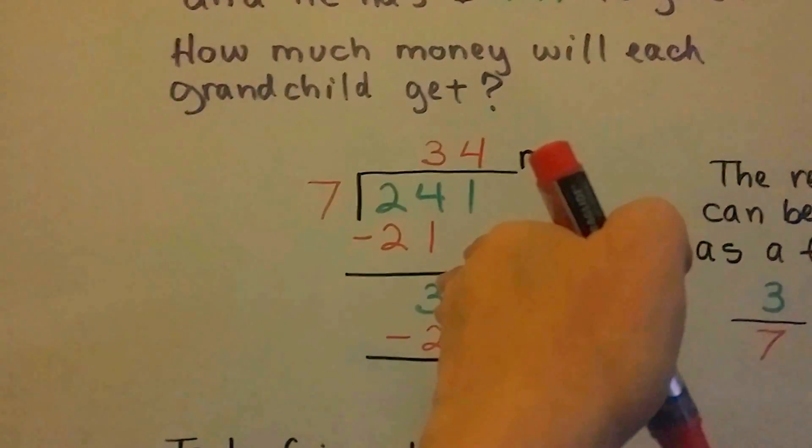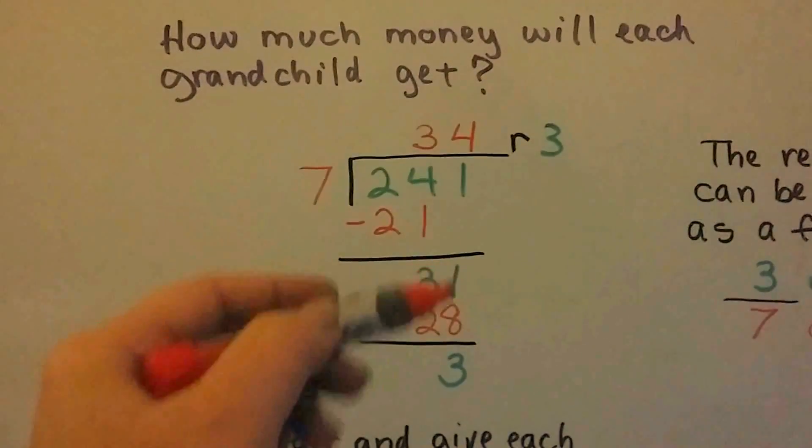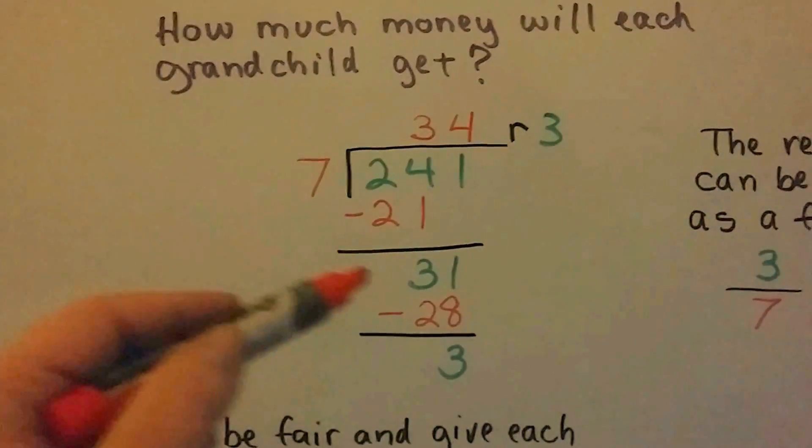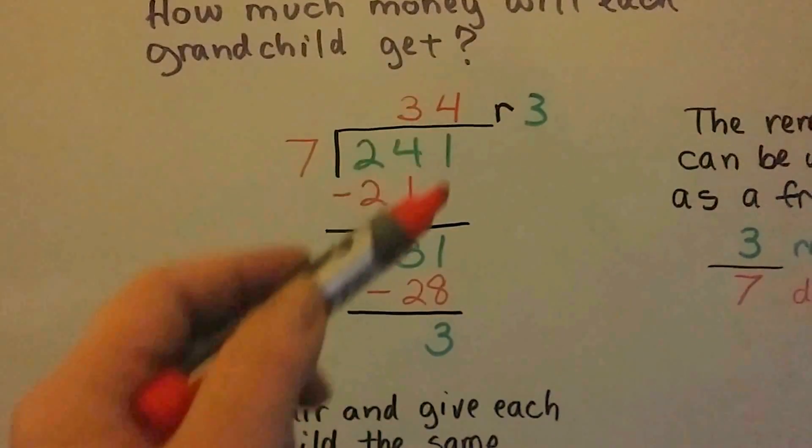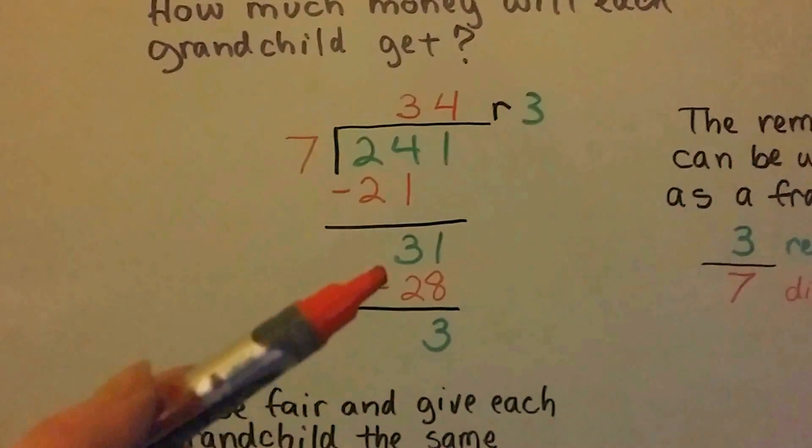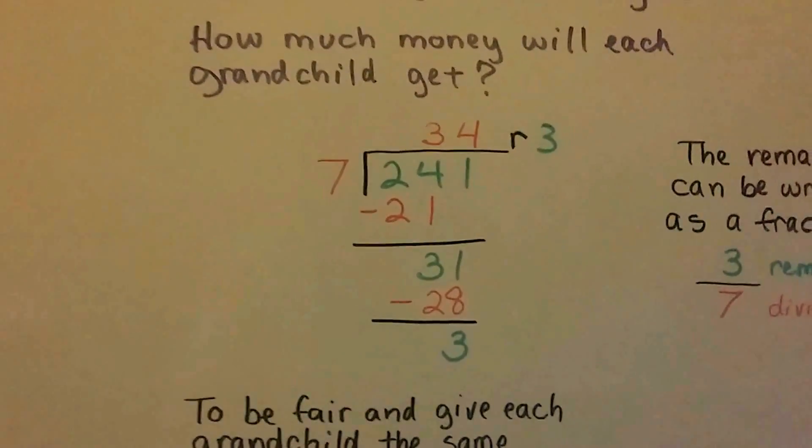We do our subtraction, and we get a 3 down here. And now, it's this 1's turn to come down. So how many times can 7 fit into 31? Well, 7 times 4 is 28. So we put our 4 above here. And 31 take away 28 is 3. So that means he's got $3 left over.